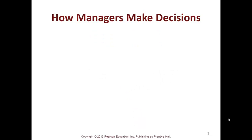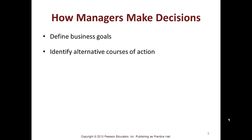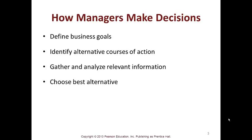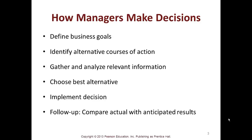How do managers make decisions? They define business goals, identify alternative courses of action, gather and analyze relevant information, choose the best alternative, and implement the best alternative. Then they follow up to compare actual with anticipated results. So this is your basic framework for management decisions from a textbook standpoint.